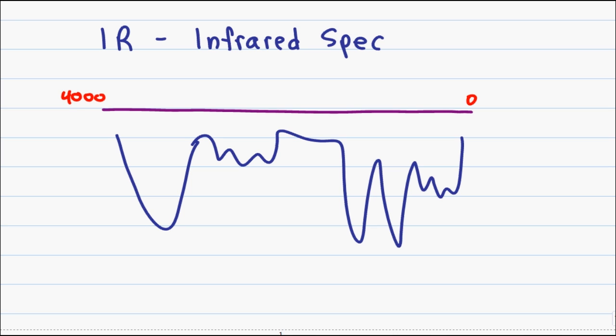IR will typically be given in a problem together with something like mass spec or NMR, and you can use these two graphs in conjunction to help come up with a molecule.